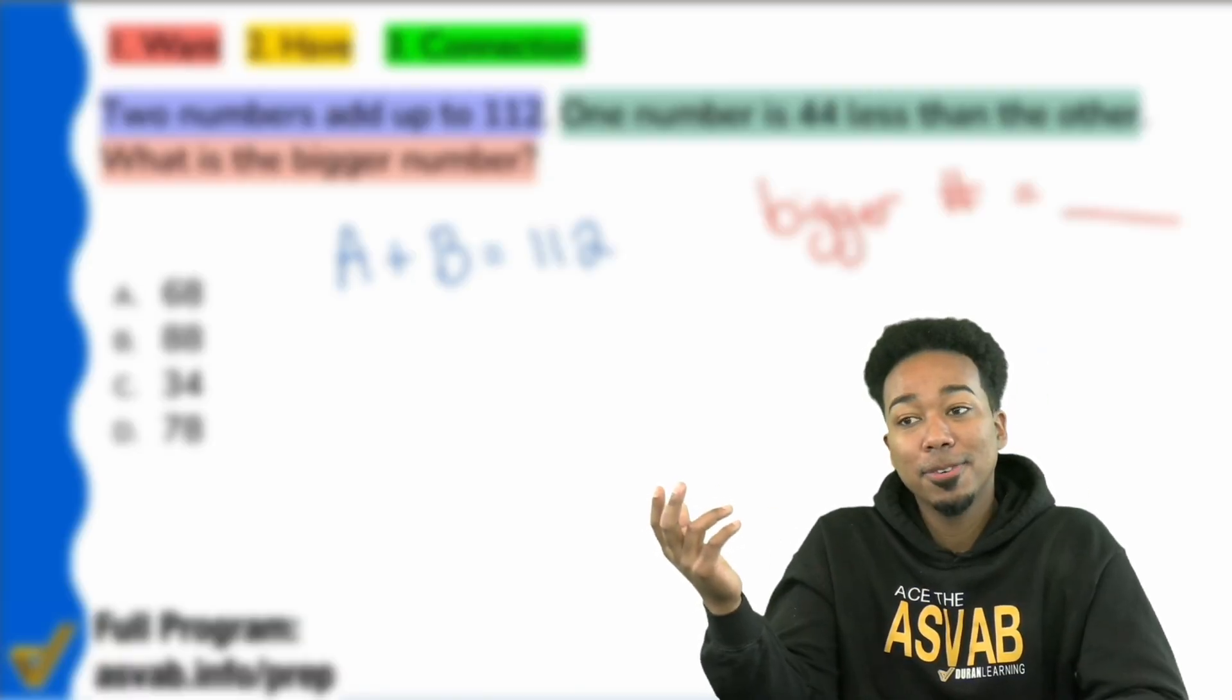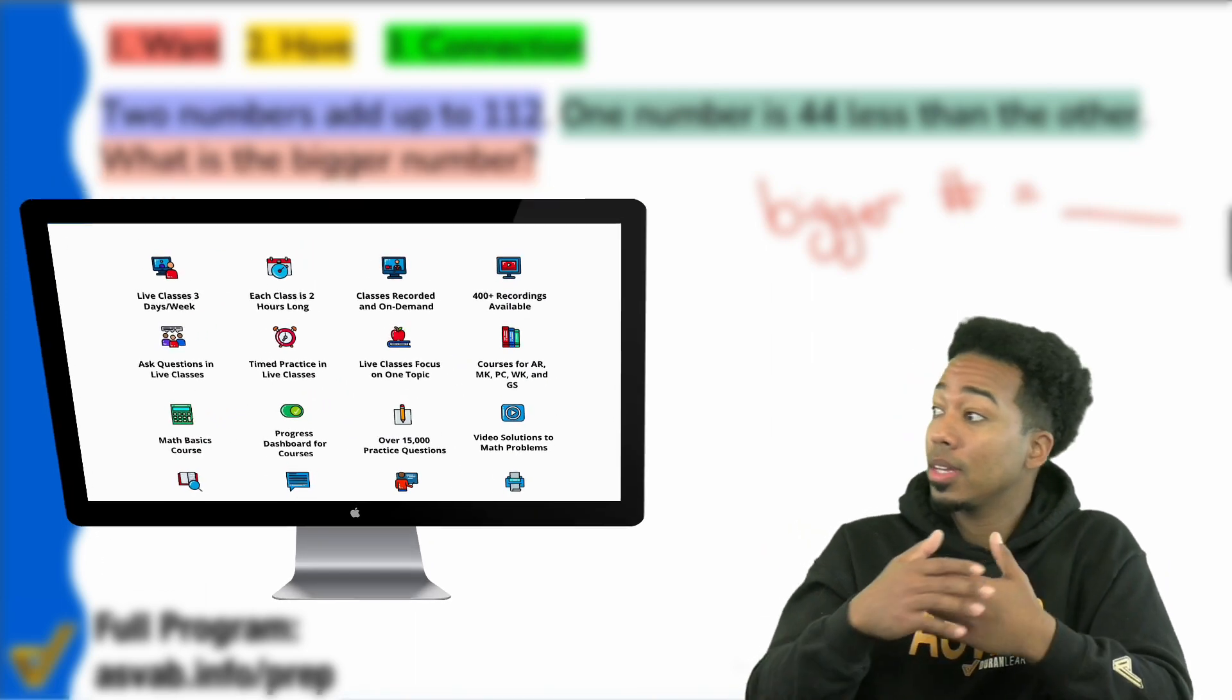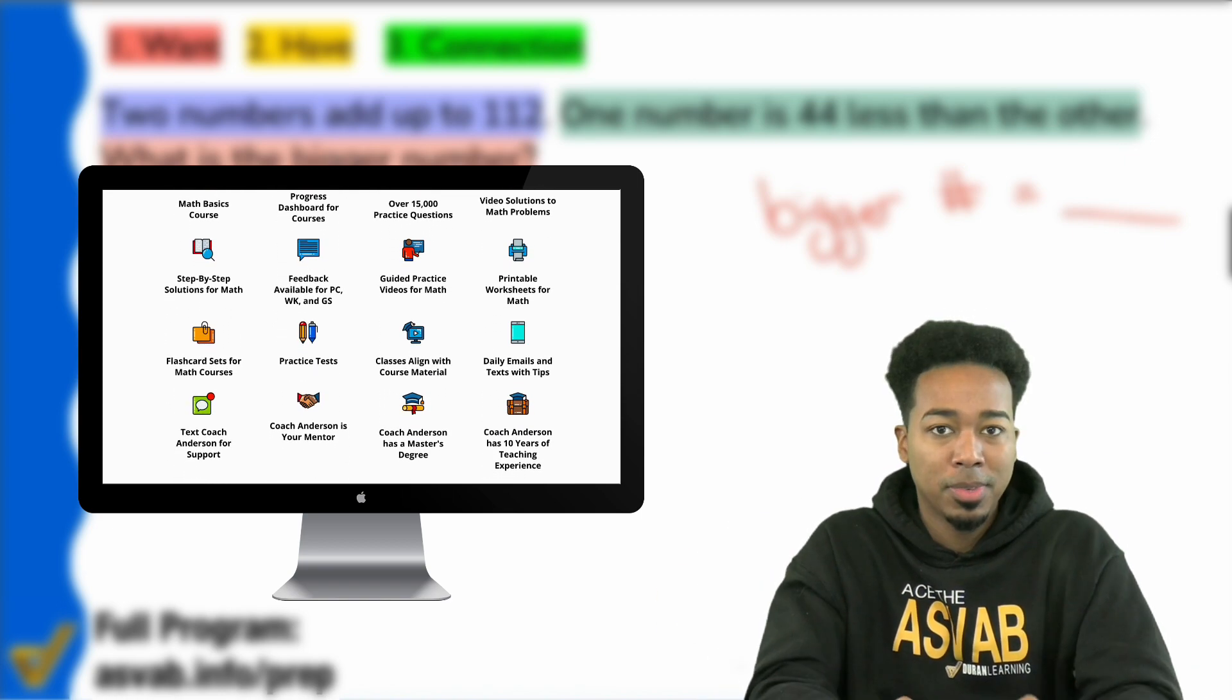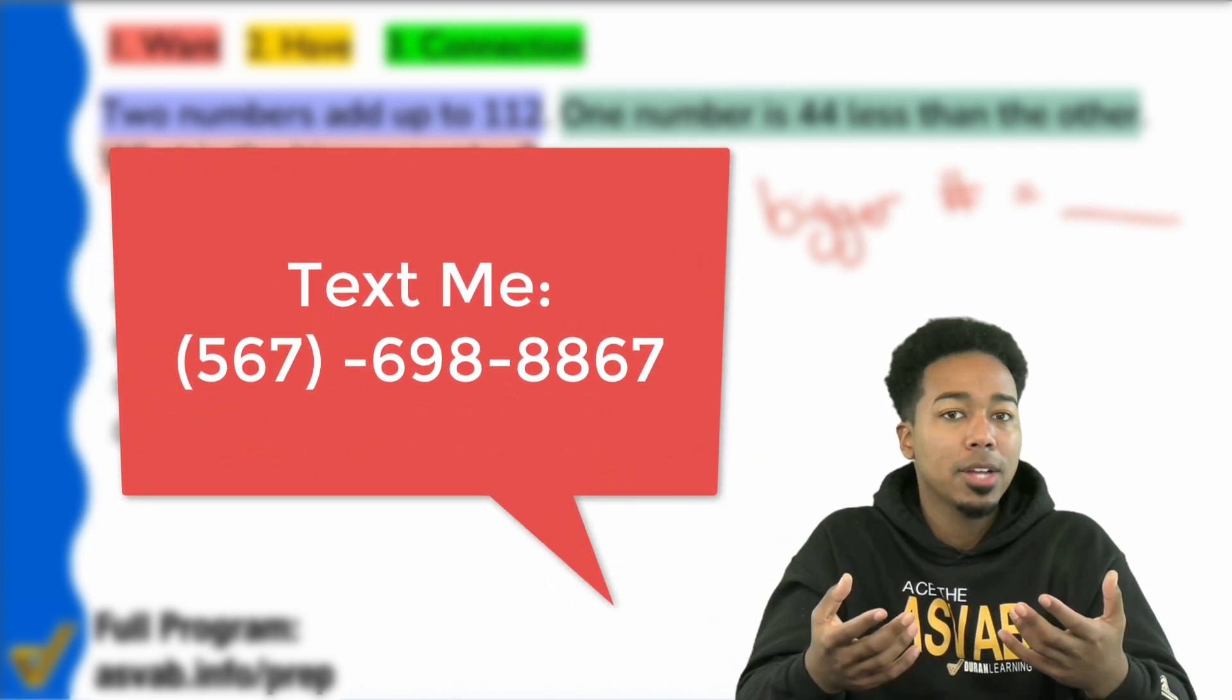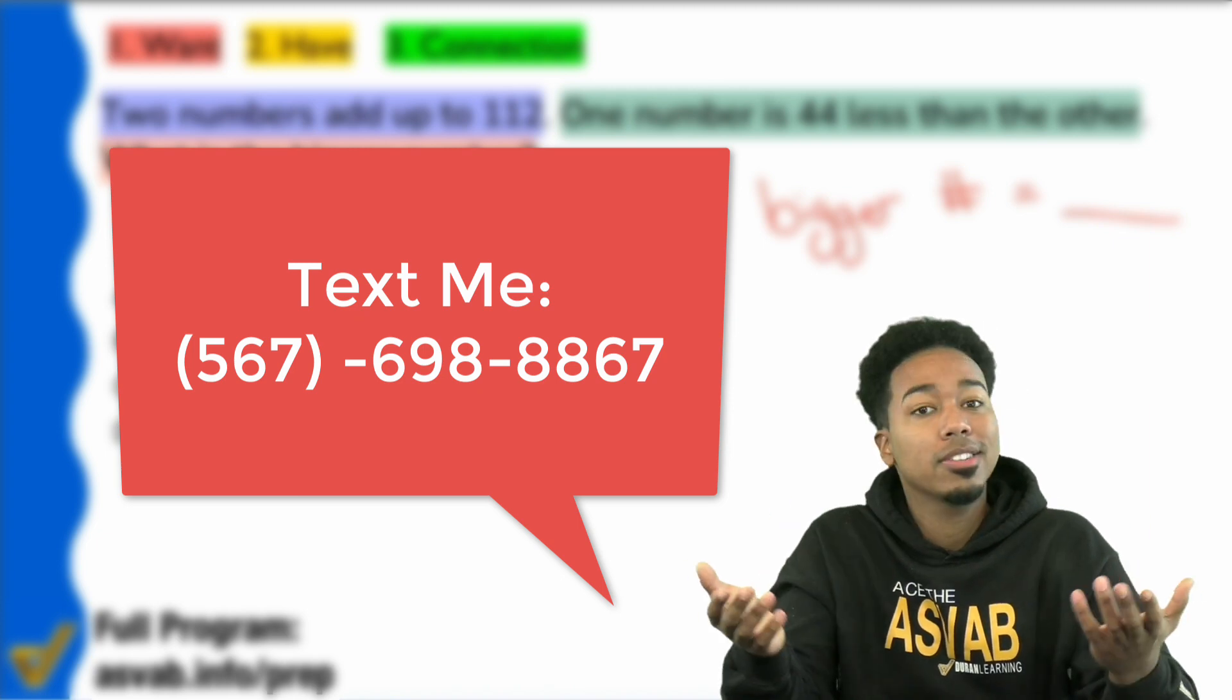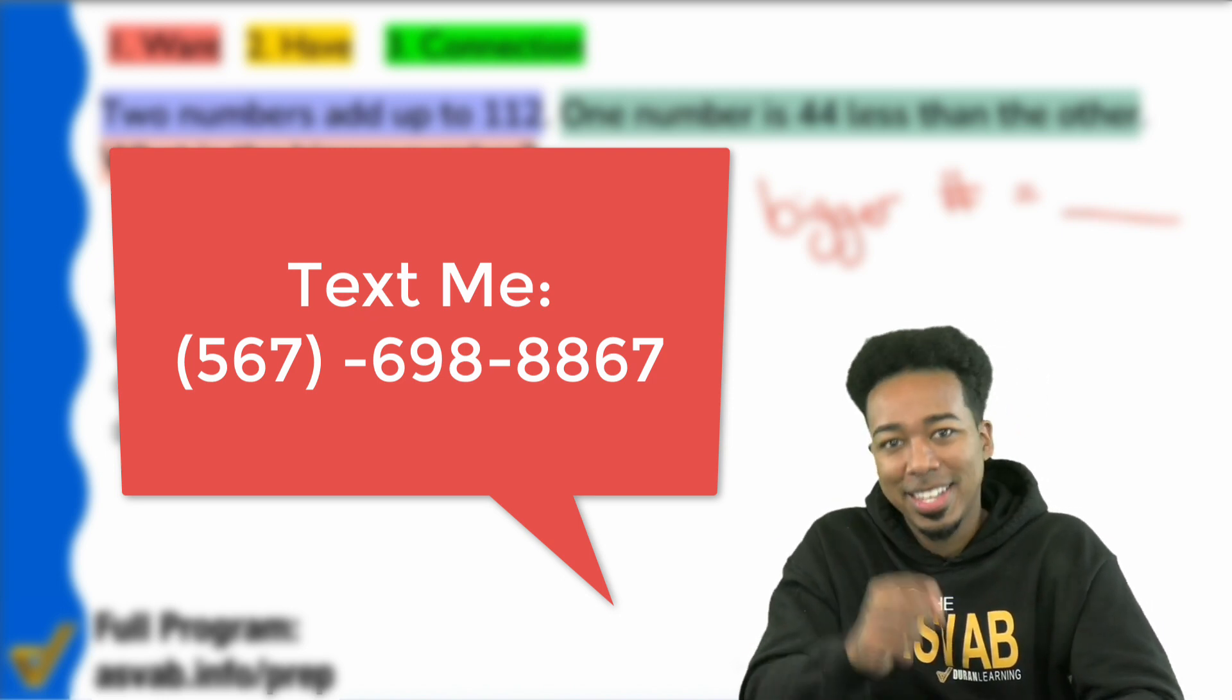And so making it this far in this video, I'm going to go ahead and say it's safe to assume that you like the way I teach. And that's the truth for a lot of folks here. So if you want to learn more about my program, where you can get all of my practice questions, including 15,000 that will help you succeed with step-by-step solutions, a lot of them having video solutions, then go ahead and reach out to me. My phone number is 567-698-8867. Go ahead and reach out to me. That way you're not stuck in the same loop that so many people are stuck in with retaking the ASVAB over and over again, when the solution to getting a higher score is right here in front of your face. Again, go ahead and text me, ask me about my full program or click the link in the description to learn more about it. But at the end of the day, sign up, get the score you want and that job you deserve.